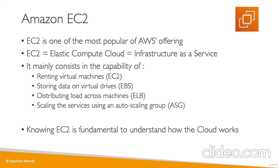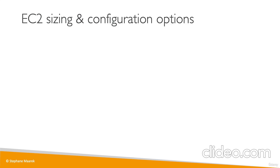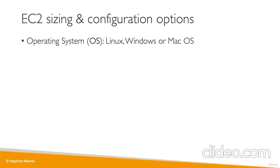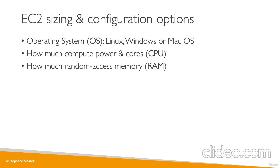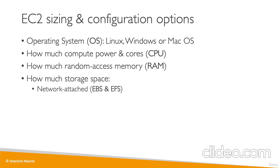The cloud is about being able to rent compute on-demand, and EC2 is just that. For our EC2 instances, you can choose the operating system — Linux (the most popular), Windows, or even macOS. You choose how much CPU, RAM, and storage space you want. For storage, you can have it attached through the network with EBS or EFS, or hardware-attached as an EC2 instance store.